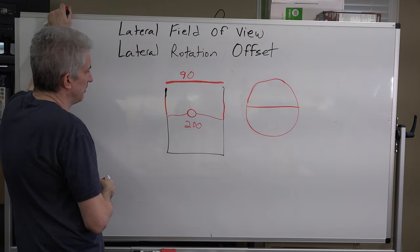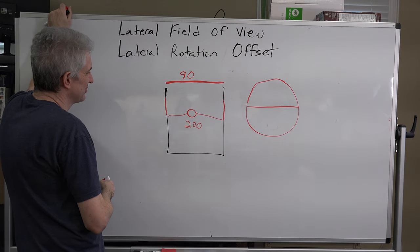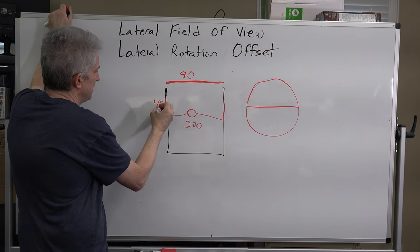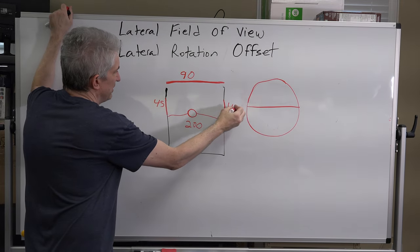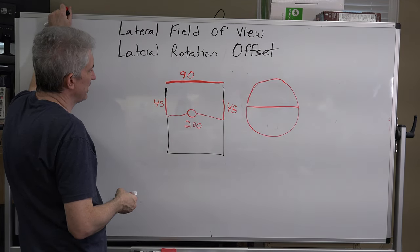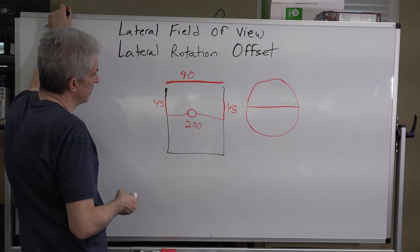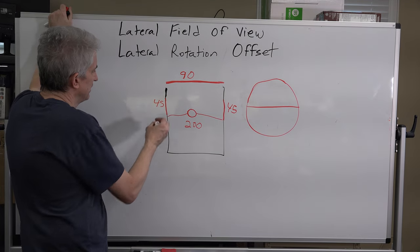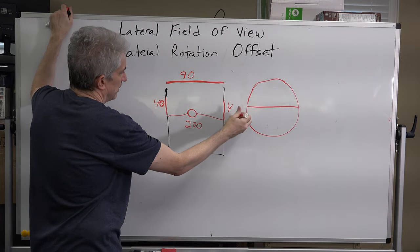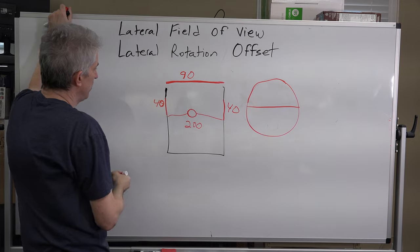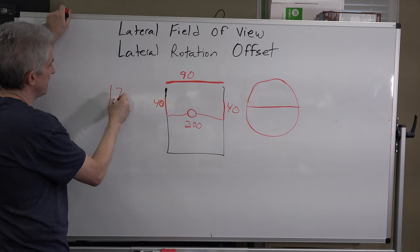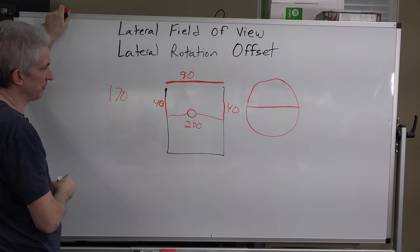And then each of these side screens would probably give us, so we had 120 left, let's say 45 here and 45 here, and then that gives us 180. Now let's say 40, let's say these do 40. So now I'm just going to right over here to the side, we have 170 degrees accounted for.